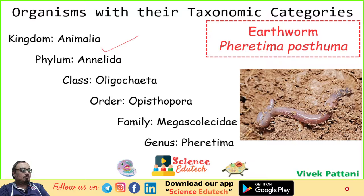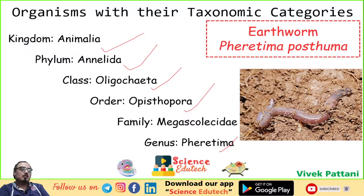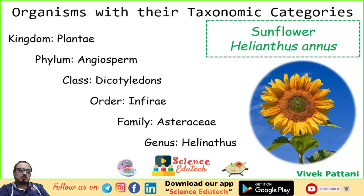Next, earthworm. Kingdom: Animalia. Phylum: Annelida. Class: Oligochaeta. Order: Opisthopora. Family: Megascolecidae. Genus: Pheretima. The scientific name of earthworm is Pheretima posthuma.